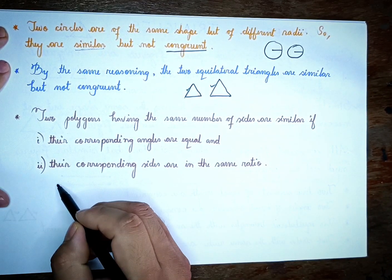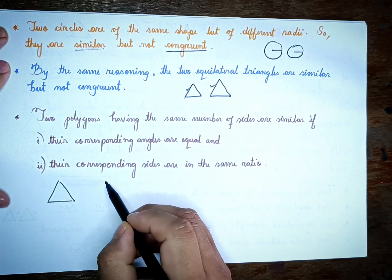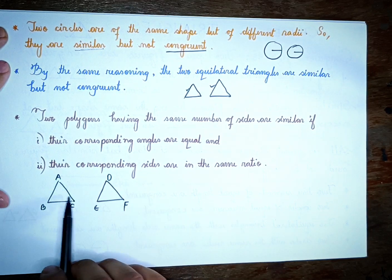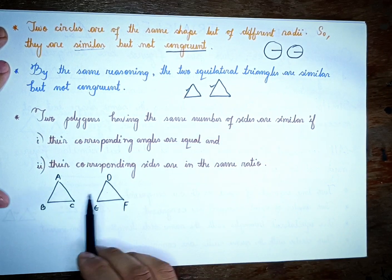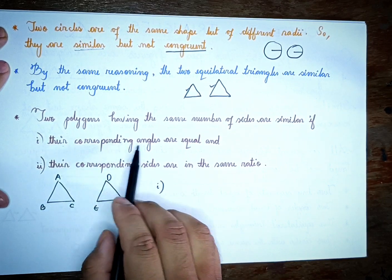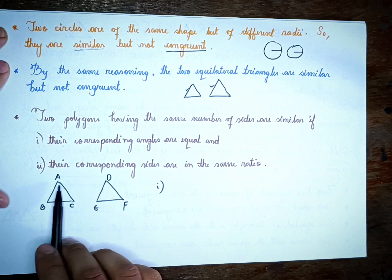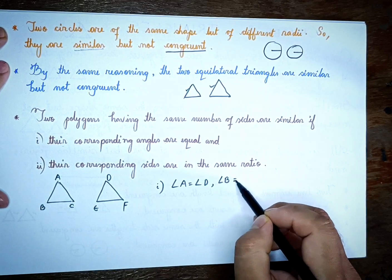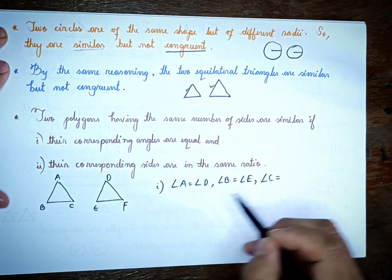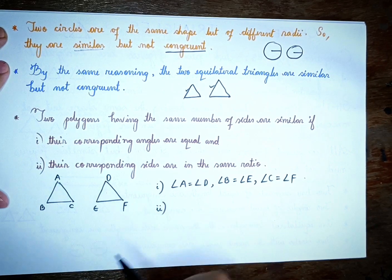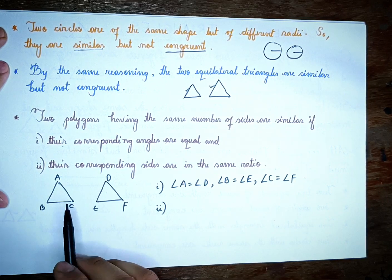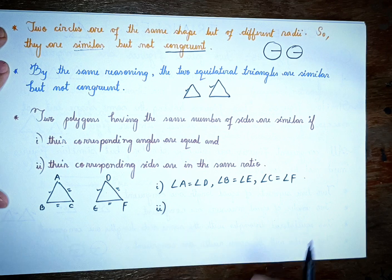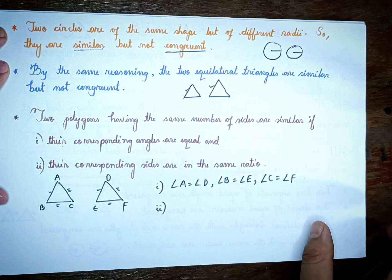If two polygons have the same number of sides, then the triangles are similar. Triangle ABC is equal to triangle DEF. Their corresponding angles are equal: angle A equals angle D. The corresponding sides are in the same ratio, for example AB over DE equals BC over EF equals AC over DF.